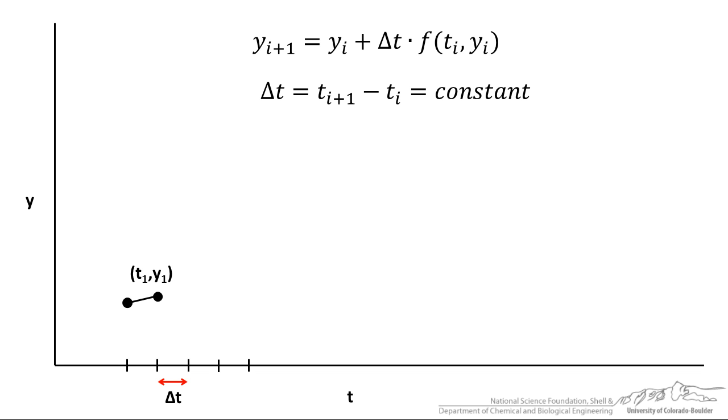We can do this now for a second time step. Our second point y2 is equal to y1 plus Δt times the function value now at t1, y1. That is our t2, y2.